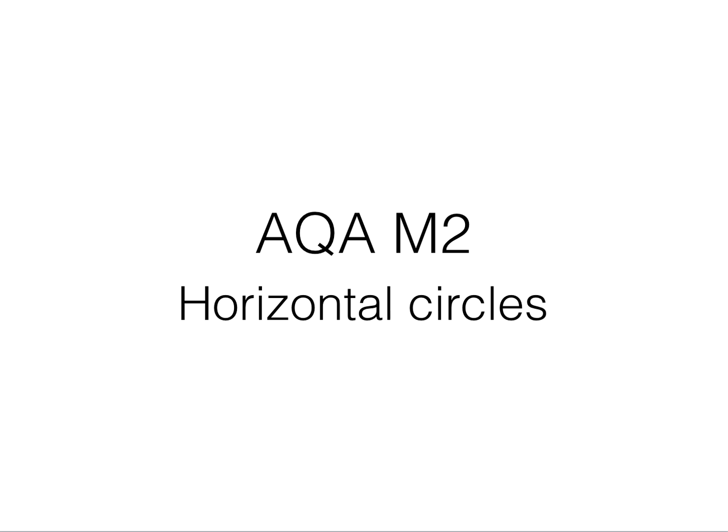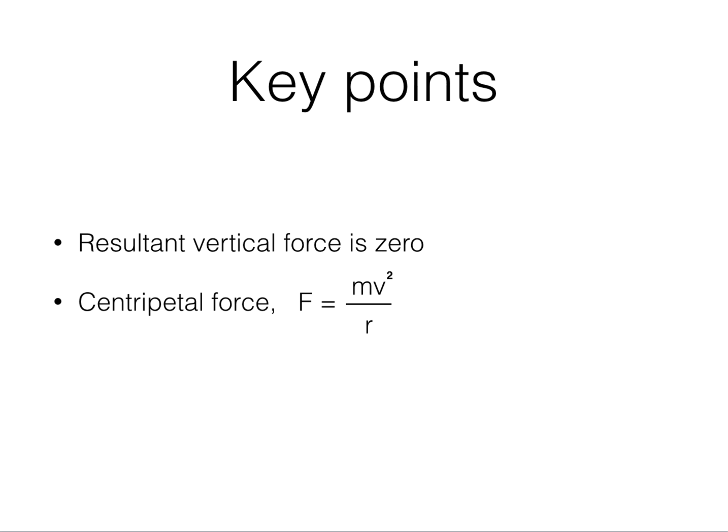When solving these questions, there are a few key points to always keep in mind. The resultant vertical force, that is the sum of the upward and downward forces, is always zero. That's because movement is in the horizontal plane and the particle doesn't move up or down.